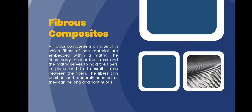Next is fibrous composites. A fibrous composite is a material in which fibers of one material are embedded within a matrix. The fibers carry most of the stress and the matrix serves to hold the fibers in place and transmit stress between the fibers. The fibers can be short and randomly oriented or they can be long and continuous.